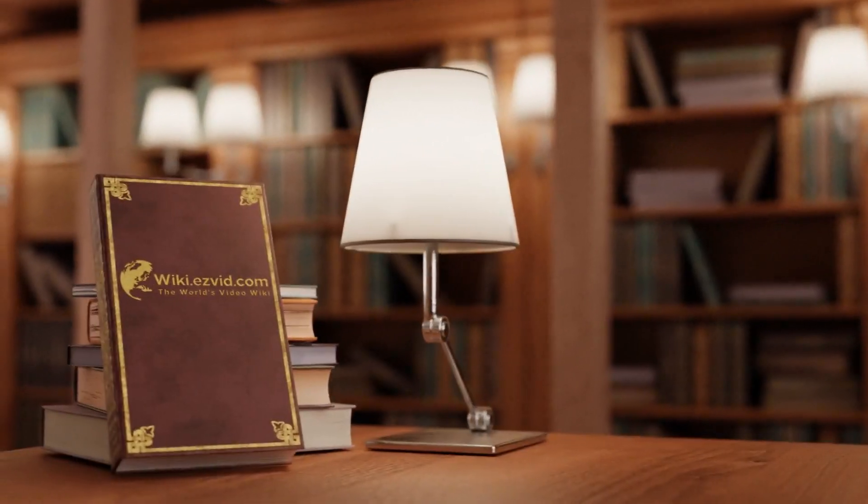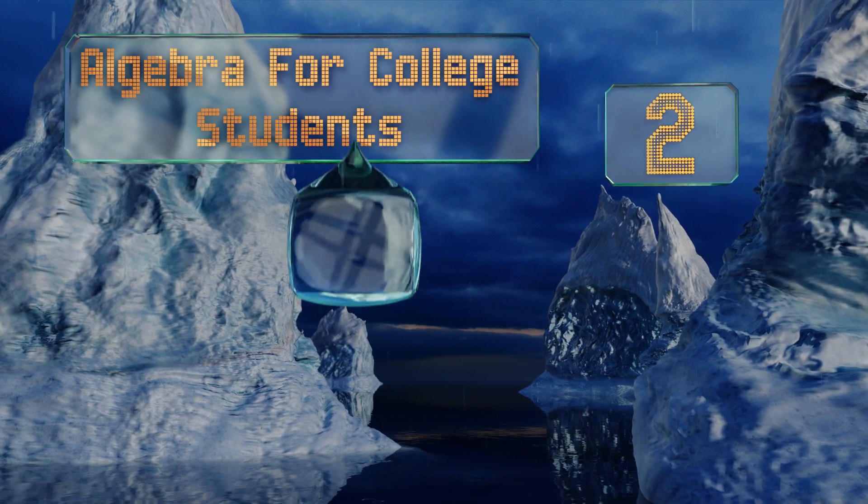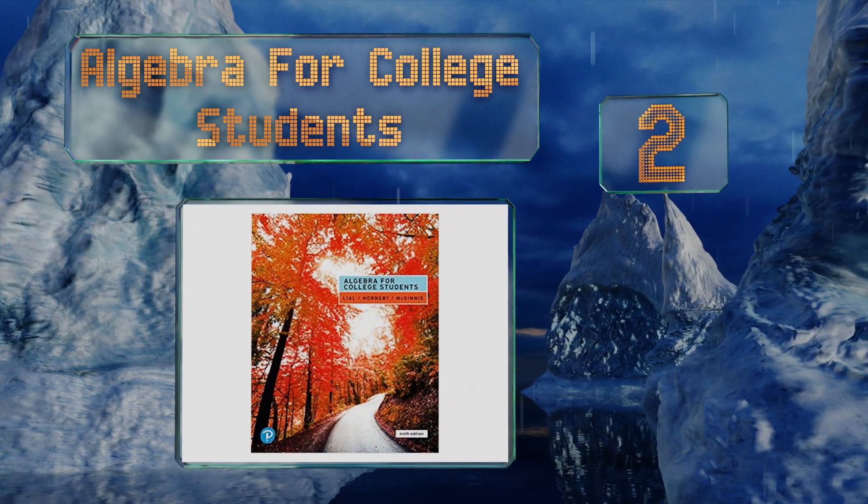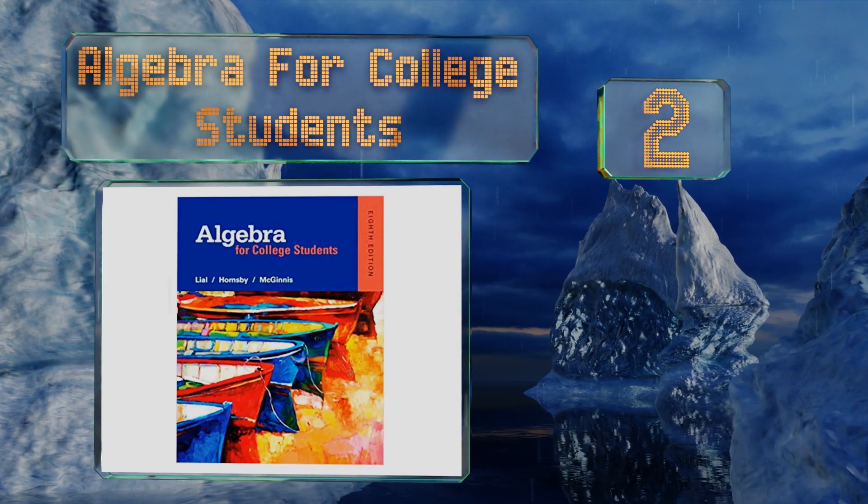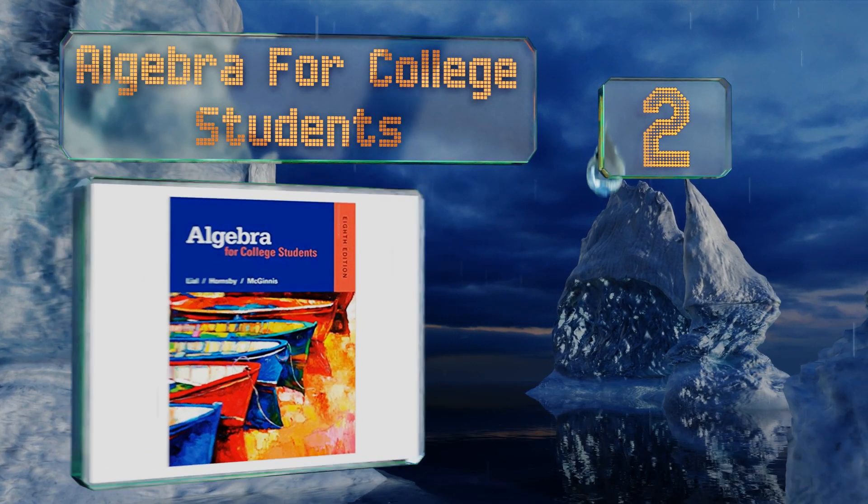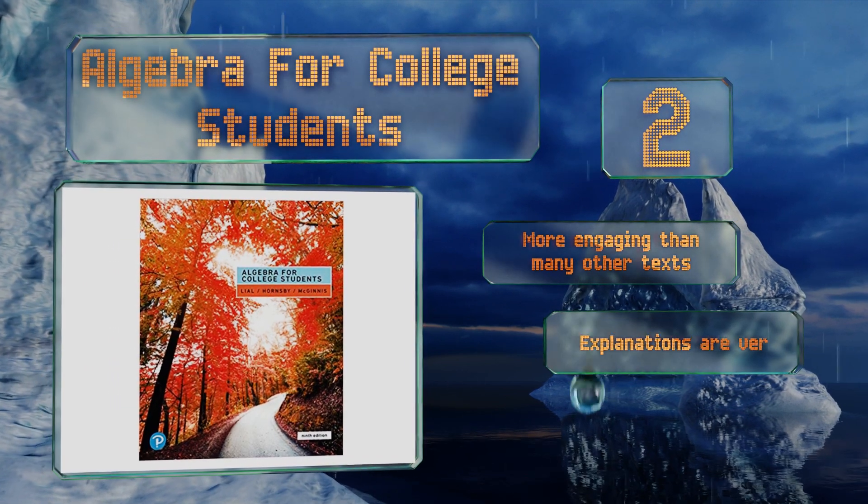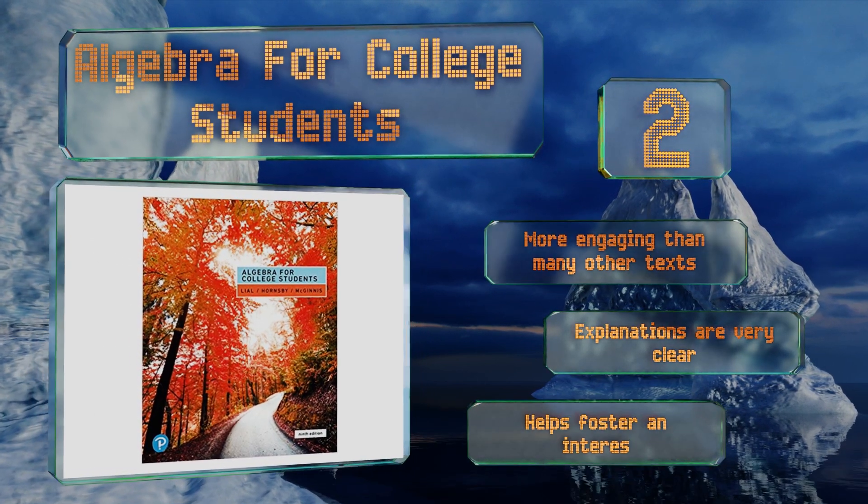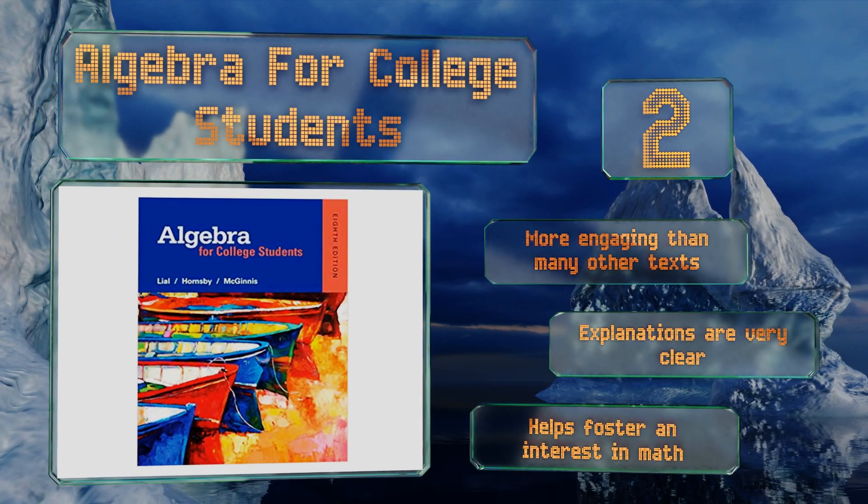At number two, Algebra for College Students covers the basic foundations such as variables and functions and gradually leads up to the more advanced levels. The author uses intriguing examples to illustrate the importance of algebra in real life, like building the pyramids. It's more engaging than many other texts and the explanations are very clear. It helps foster an interest in math.